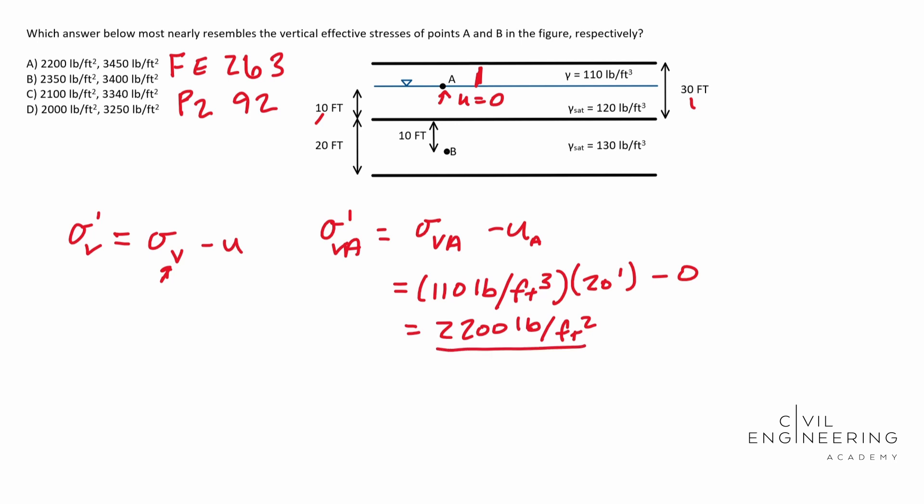So there's A, we see that A is going to be the answer. That's just how it's going to be. So for the vertical effective stress of B, let's get some practice here.